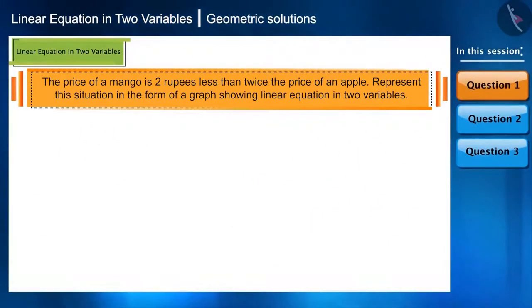The price of a mango is 2 rupees less than twice the price of an apple. Now, represent this situation in the form of a graph showing linear equation in two variables. Let's see how to solve such questions.